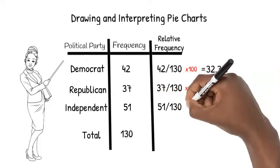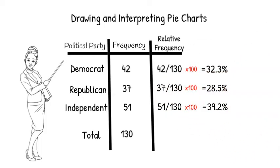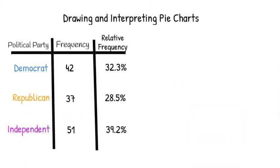Now that we have the relative frequency for each category, we can figure out the size of each sector of our circle. Remember that a circle is made up of 360 degrees. To find the size of each angle needed to create our sectors, we need to multiply the relative frequency by 360.